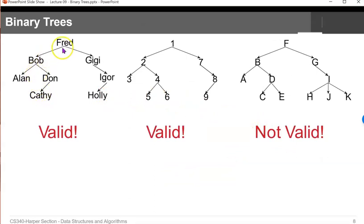So here's a valid binary tree. We've got Fred, which has Bob and Jeezy as his children. Alan, which has Bob as a parent. Don, which has Bob as a parent. And Kathy, which has Bob as a parent. Here's another one that is also valid. This tree is not a valid binary tree because it actually has one node with three children.